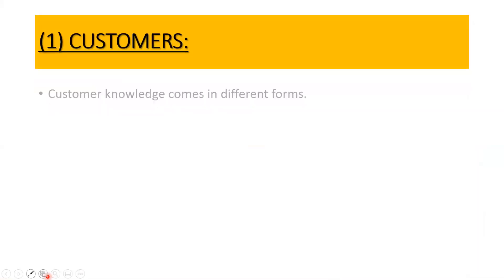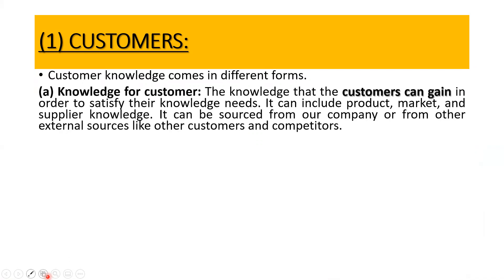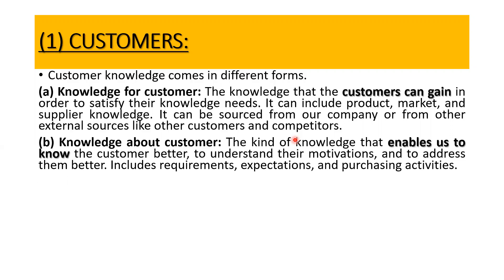Knowledge from customers takes place in different forms. Knowledge for the customer is what customers need so that their knowledge needs get satisfied — a customer may require information about the product, the market, or the supplier — sourced from our company or from external sources like other customers and competitors. So a customer first obtains knowledge, which could be provided by us, by a competitor, or by another customer.